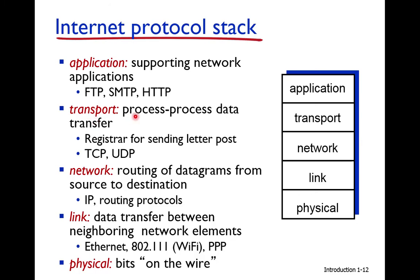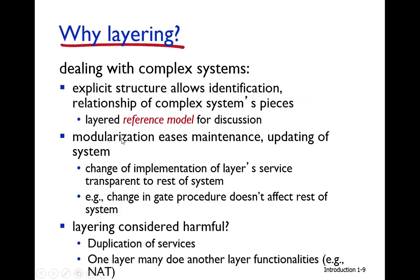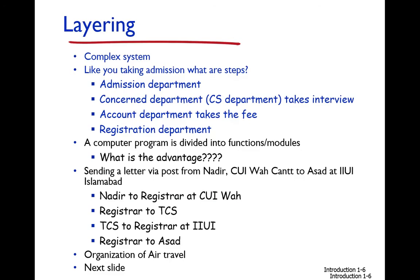The transport layer delivers data from application to application, from process to process. Using the letter analogy, it is like delivering the letter from registrar to registrar. Nadir is a user application sending a letter to Asad at IIU. They cannot send the data directly — it goes through the registrar. The letter goes from the registrar at CUI to the registrar at IIU, but the registrar does not physically deliver it — TCS physically takes the letter between the two registrars.